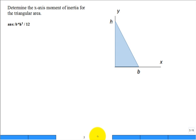Determine the x-axis moment of inertia for the triangular area. So the triangular area, the 90-degree angle is tucked into the corner of 0, 0. And the x-axis, it goes out a distance b for the base. And the y-direction goes out a distance h for the height.